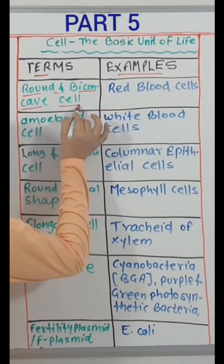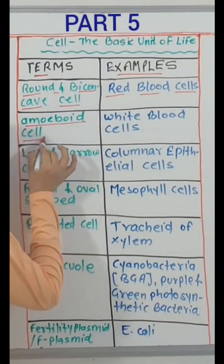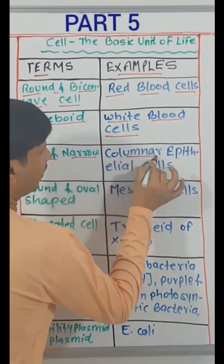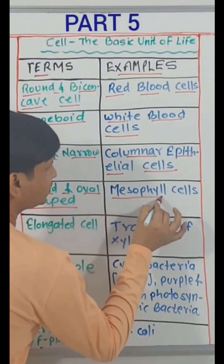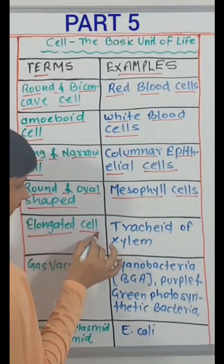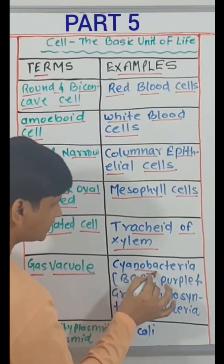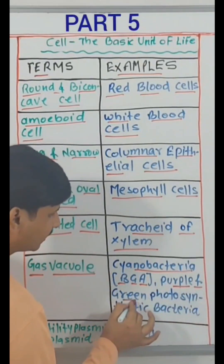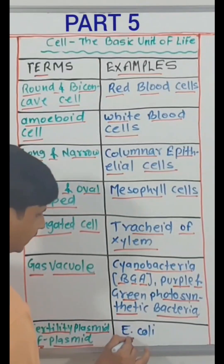Round and biconcave cell — red blood cells. Amoeboid cell — white blood cells. Long and narrow cell — columnar epithelial cells. Round and oval-shaped — mesophyll cells. Elongated cell — tracheid of xylem. Gas vacuole — cyanobacteria, that is blue-green algae, and purple and green photosynthetic bacteria. Fertility plasmid, that is F plasmid — E. coli.